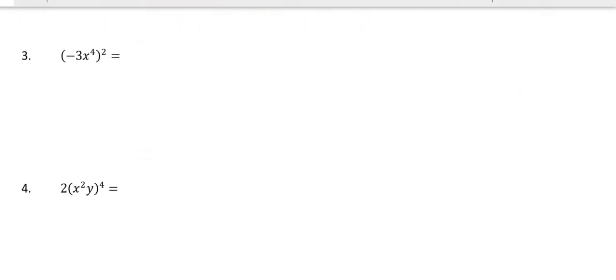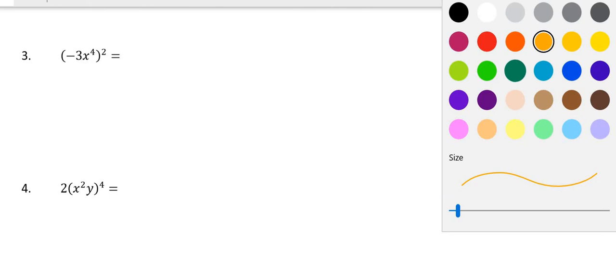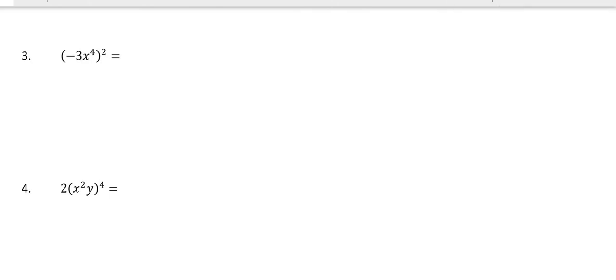A couple more to illustrate a point. This question is really important and something we love to ask, because you have a negative. The question is: where is that negative? It's inside the bracket. So this squared belongs to the whole bracket, and the entire bracket of negative 3x to the power of 4 is repeated. When I multiply: signs, numbers, variables.